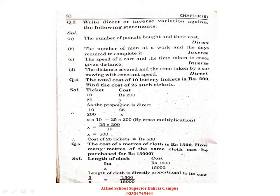Since it is direct variation, the proportion between 25 and X is also direct, and the proportion between 10 and 200 is also direct. So we write: 10/200 = 25/X. By cross multiplication, X multiplied by 10 equals 200 multiplied by 25. Shifting 10 to the other side as division: X = 25 × 200 ÷ 10. The answer is 500 rupees. So the cost of 25 tickets is 500 rupees. Clear?